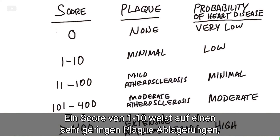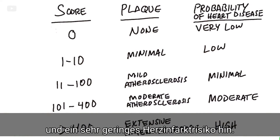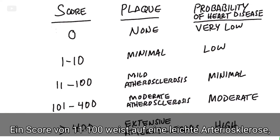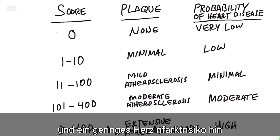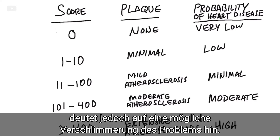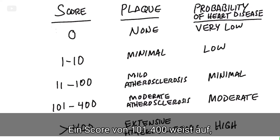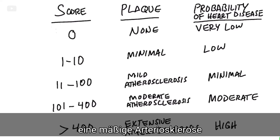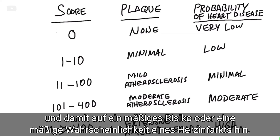If the score is between 1 and 10, the plaque is very minimal and there's a low chance of getting a heart attack. If the score is between 11 and 100, there's mild atherosclerosis and your probability of getting a heart attack is minimal, but it tells you something is brewing. If your score is between 101 and 400, there's a moderate amount of atherosclerosis and you have a moderate probability of getting a heart attack.